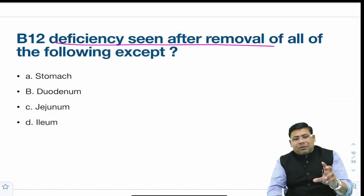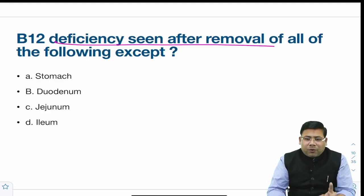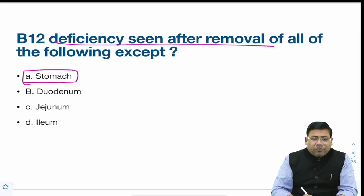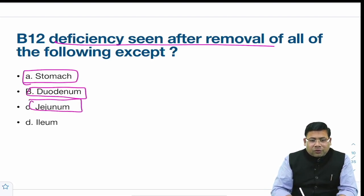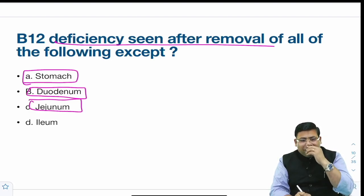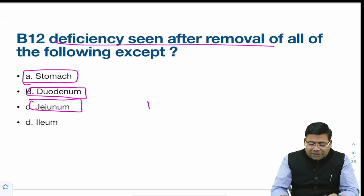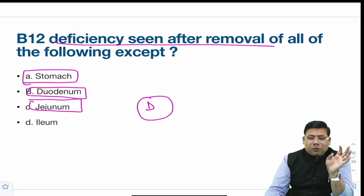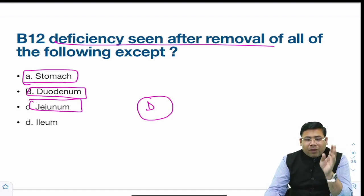There was a question on Vitamin B12 deficiency. B12 is produced by intrinsic factor from the stomach, and absorbed in the terminal ileum. It is also partly absorbed in the duodenum and jejunum. Ileal resection — total ileal resection — will also cause B12 deficiency, but ileal resection is the answer of exclusion in this context.